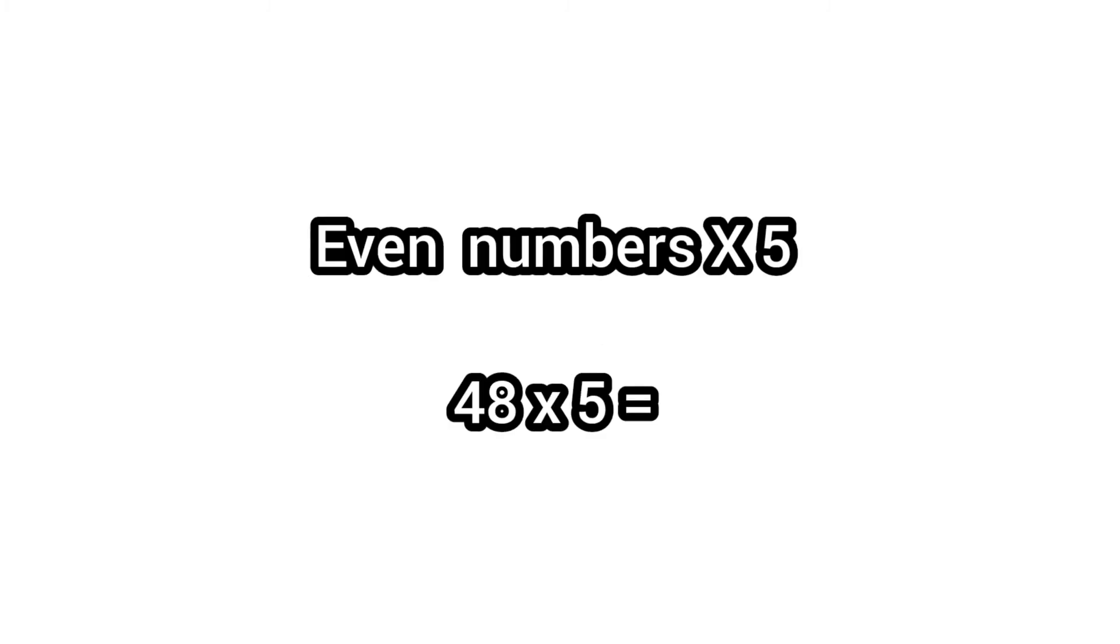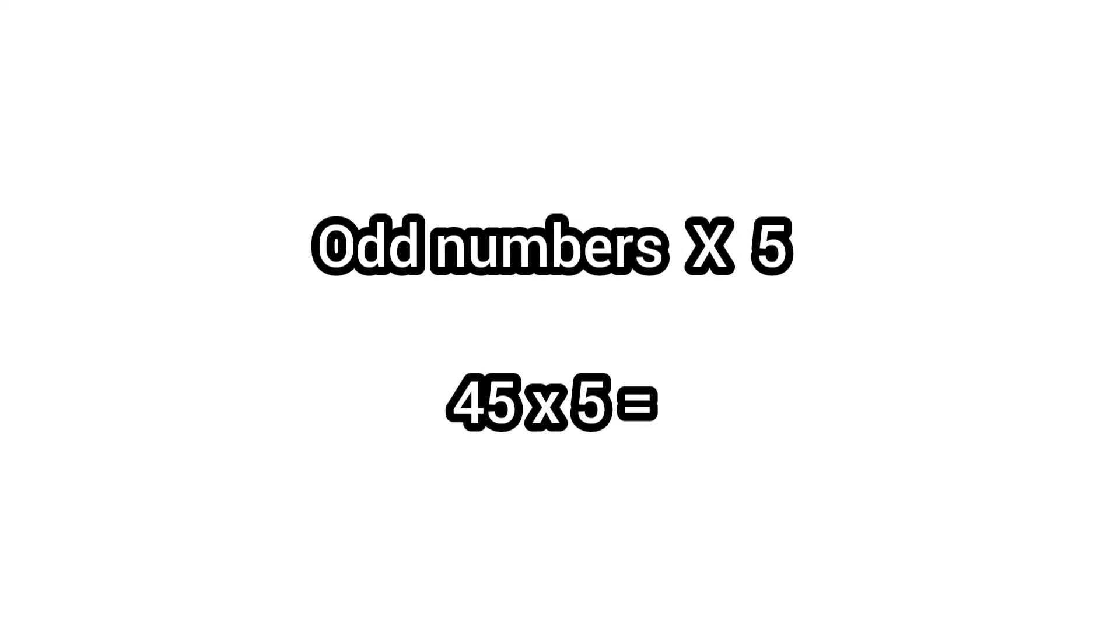If you multiply by 5, like 48 times 5, divide 48 by 2 and you get 24. Now you add 0, and it's as simple as that. Now 44 multiplied by 5: divide by 2, you get 22 remainder 1, then replace remainder 1 with 5.